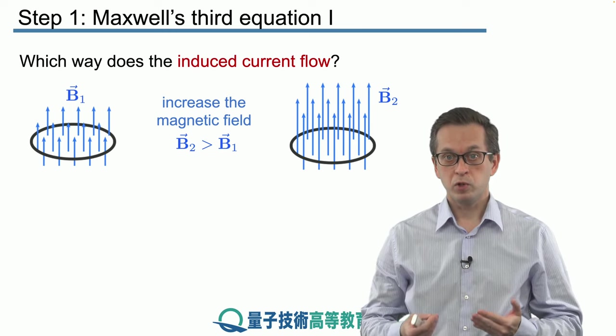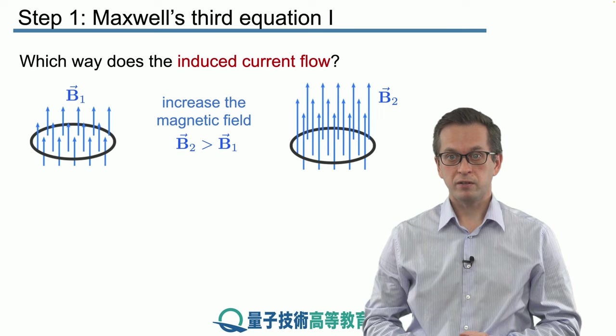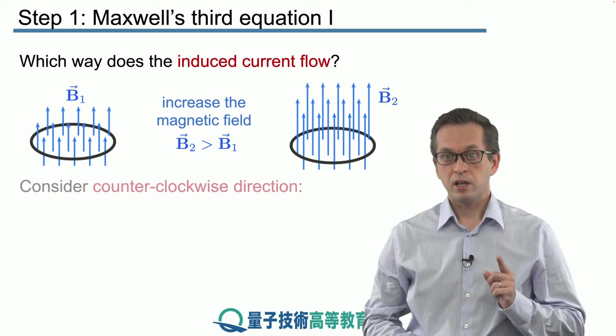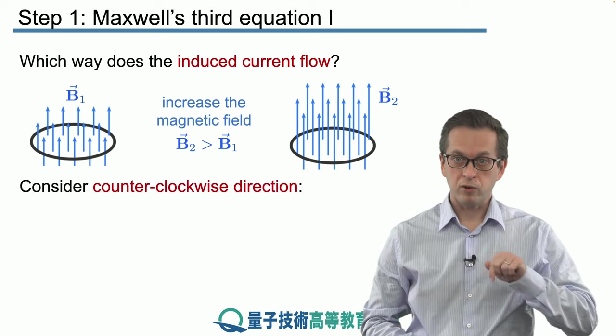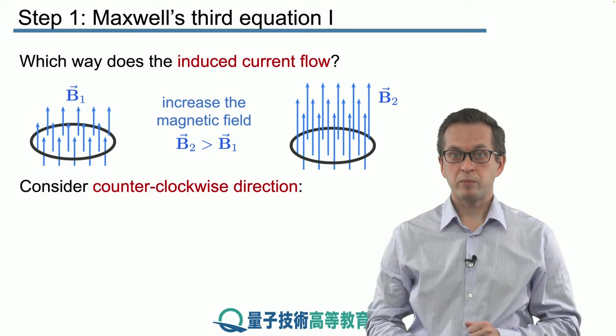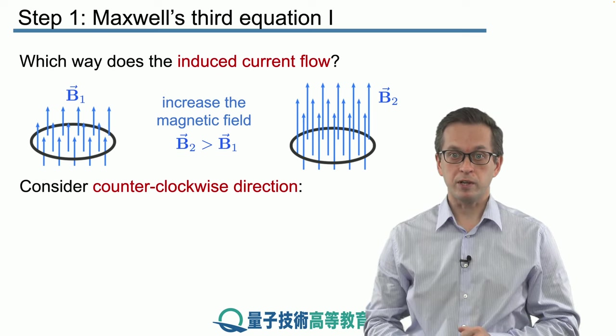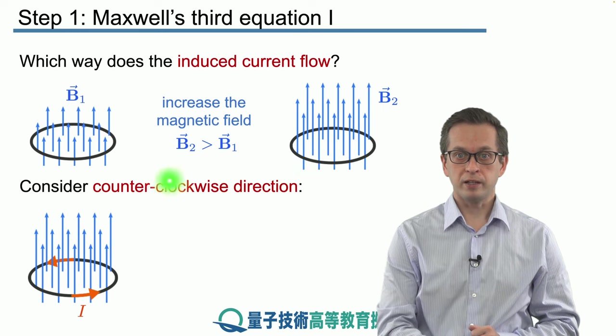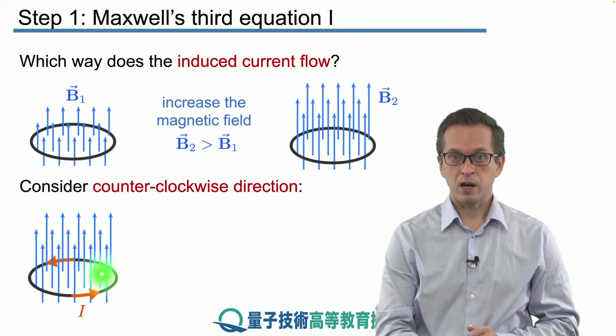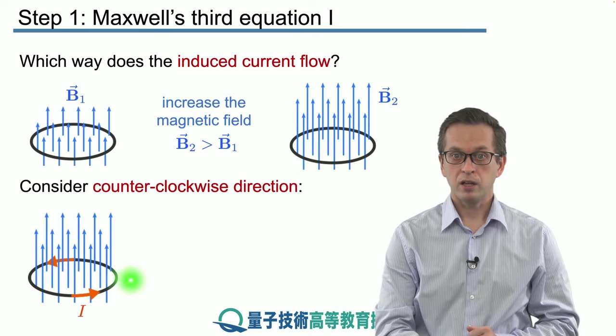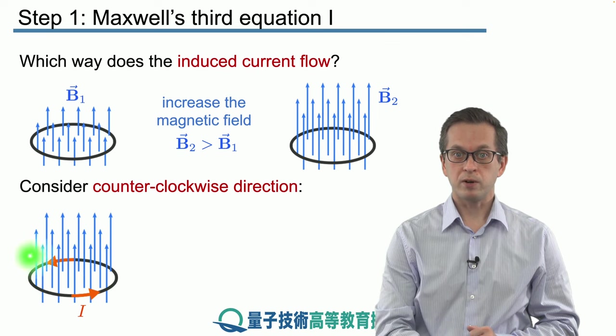And as we said, due to this change we generate a current. Now the question is, in what direction is the current flowing in the loop? Let's consider what happens if it's flowing counterclockwise. We've got our magnetic field here and we've got the induced current flowing in the loop in the counterclockwise direction.